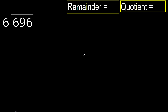696 divided by 6. 6 is not less, therefore start with 6. 6 multiplied by which number is nearest to 6, but not greater?